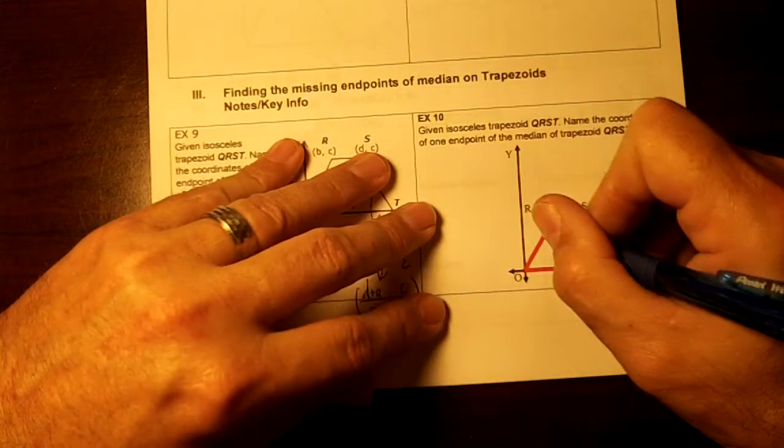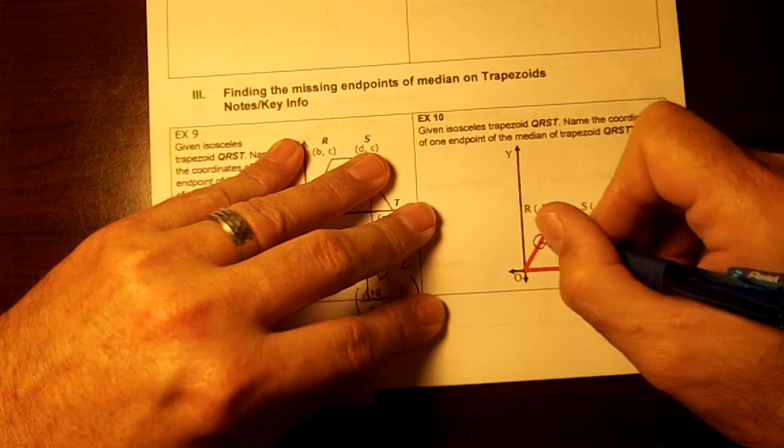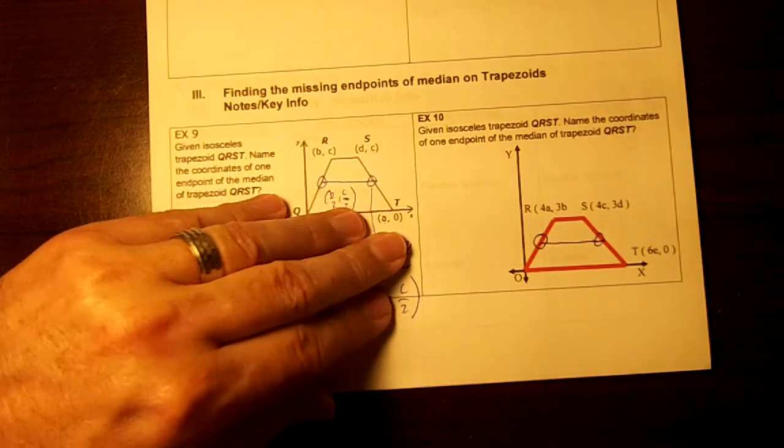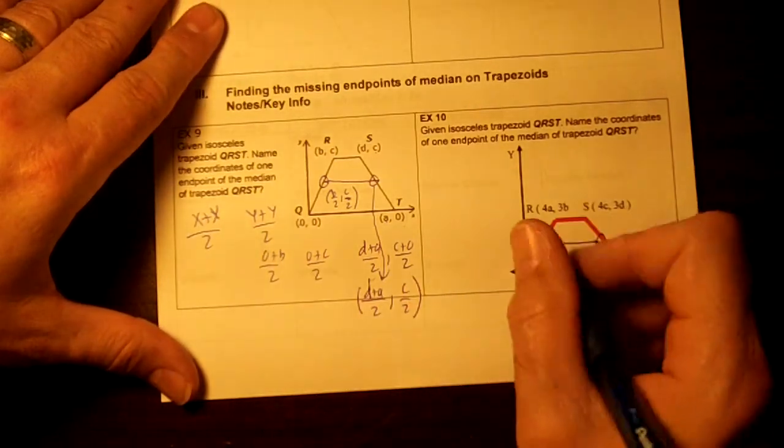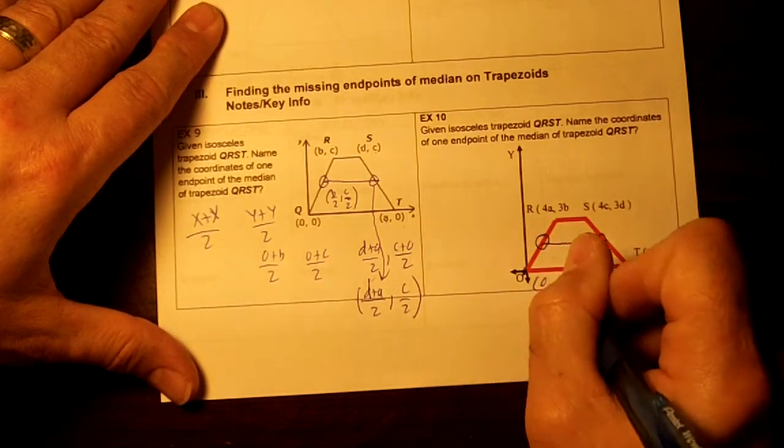Now then let's do this one. We want to find this midpoint and this midpoint. Remember, it connects the median here. So do x plus x divided by 2 and y plus y divided by 2. This point right here is 0 comma 0, isn't it?